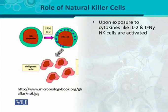Upon exposure to cytokines, the pre-forms of natural killer cells — the NK cell progenitors — are activated. Just as cytotoxic T lymphocytes have an immature form called pre-CTL, NK cells have a progenitor form that is activated by certain cytokines like IL-2 and interferon gamma, which activate the NK cells.